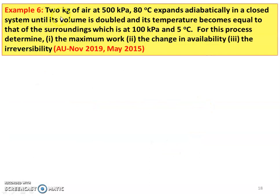Next, example number 6. 2 kg of air at 500 kilopascal, 80 degree Celsius expands adiabatically in a closed system until its volume is doubled, and its temperature becomes equal to that of the surroundings, which is at 100 kilopascal and 5 degree Celsius. For this process, determine maximum work, change in availability and irreversibility.